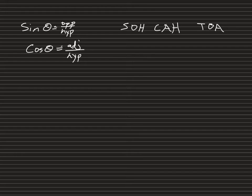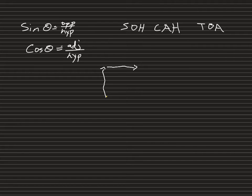This video is about vector components — how to break a vector down into x and y components. So far we've talked about how to find the resultant vector, or the hypotenuse of the triangle, when we have vectors perpendicular to one another. We add those vectors head to tail, and the resultant is drawn from where you started to where you ended up. We used the Pythagorean theorem and the tangent function to find the angle. Now we're going to do the opposite of that.